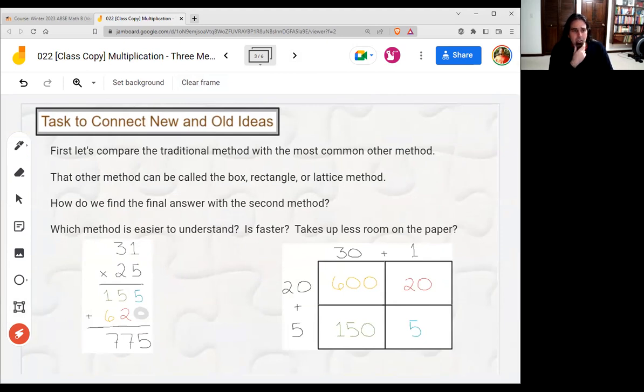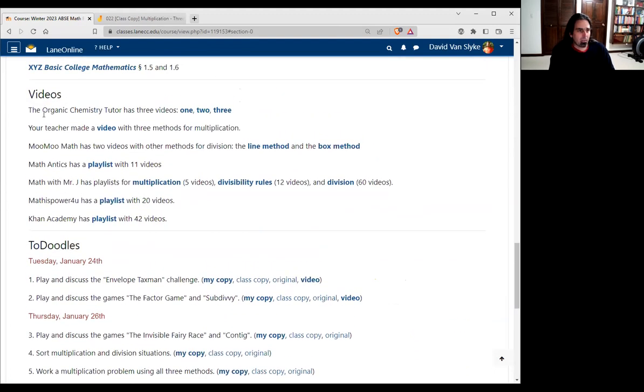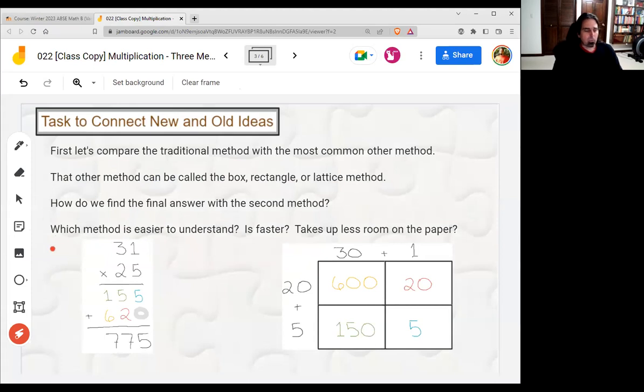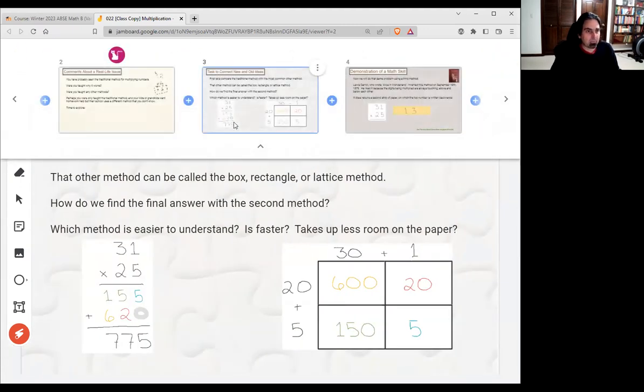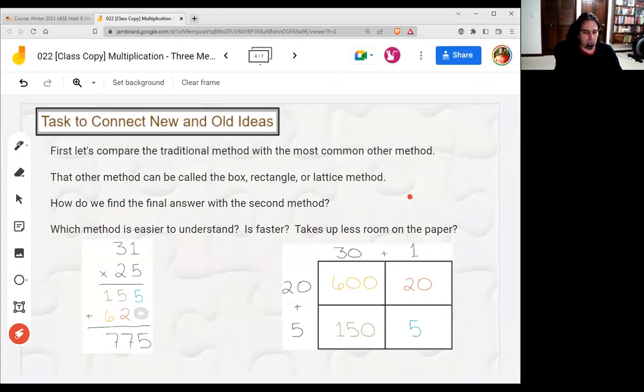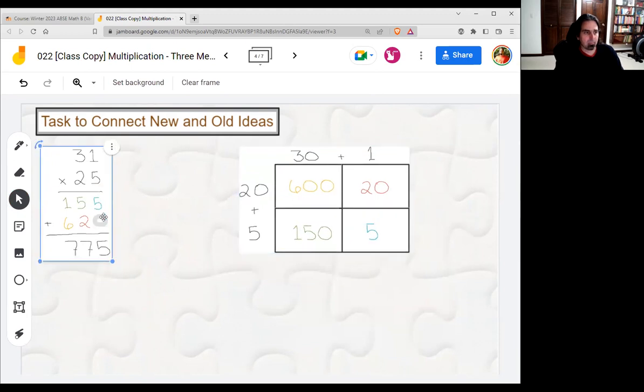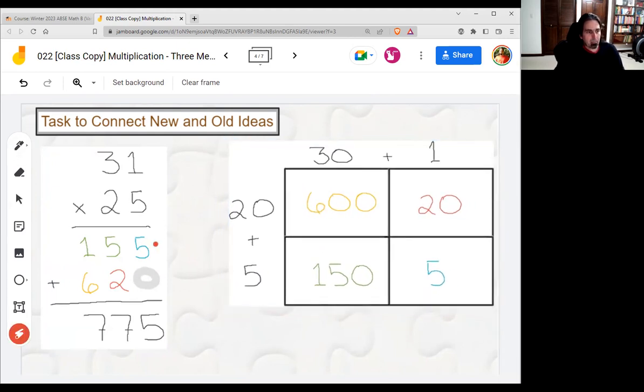First, we're going to compare this traditional method with the one we'll see most often because of schools in Eugene and Springfield, and we can call it the box or rectangle or lattice method. I mention all three of those because the YouTube videos from our course can call it all three of them. If I go up a little bit, then we have lots of videos for multiplying and dividing, and they will use different names. So I am going to copy this so I can take one and destroy it and make it bigger.